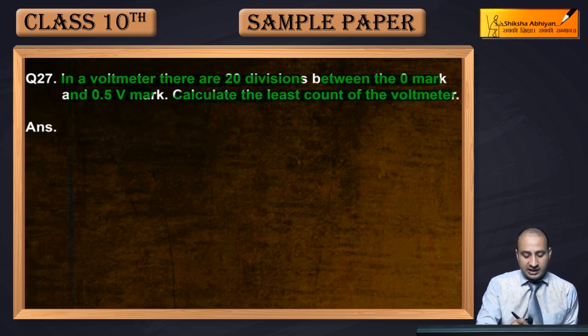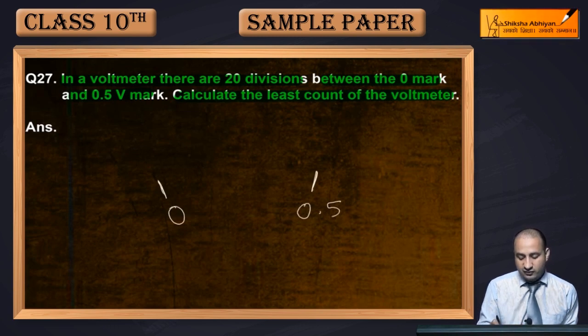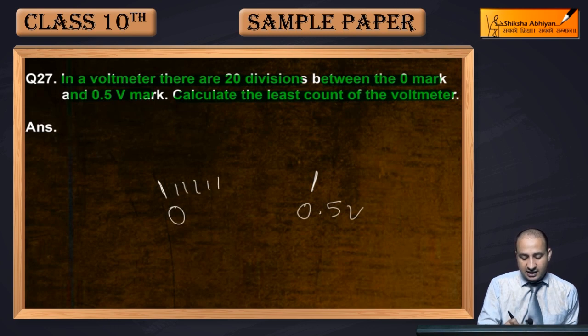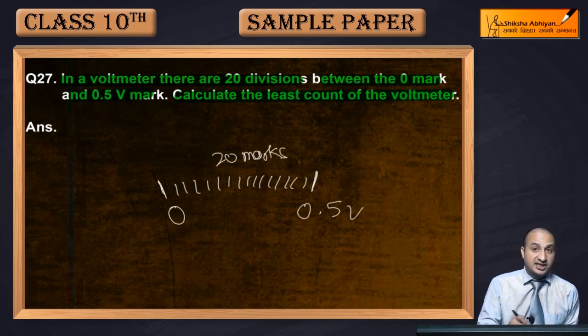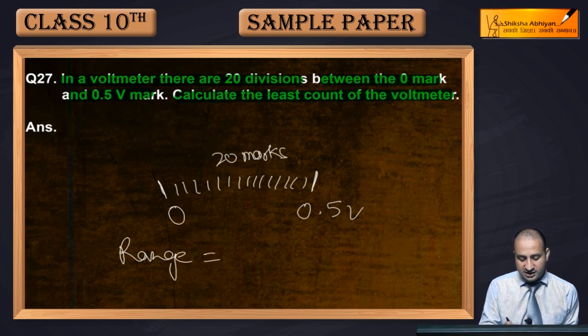So you have to find the least count of the voltmeter. If this is 0 volt and this is 0.5 volt, you have 20 marks, 20 divisions. The range here is highest minus lowest, that is 0.5 volt.